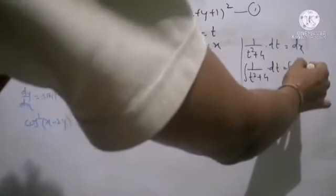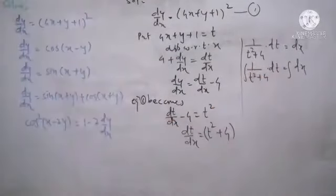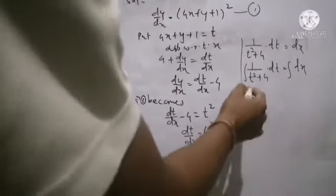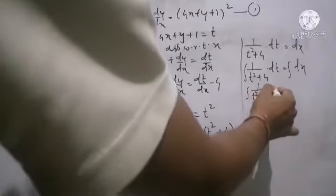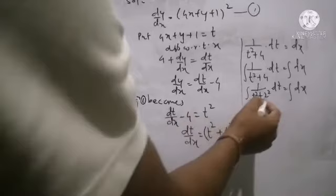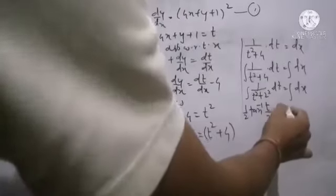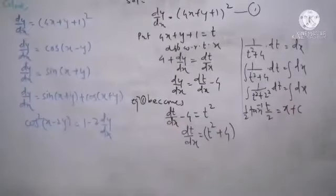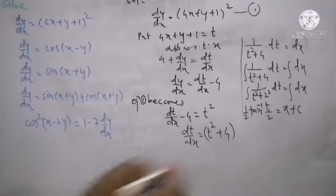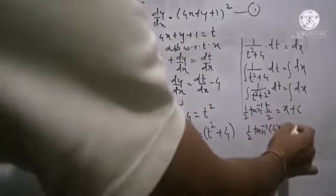The term of t and dt are separated, and dx is separated. Take integration to solve. On the left hand side, this is of the rational function form: numerator 1, denominator is a quadratic term of t with constant. We write the constant as a power square: 4 is the square of 2. Using the standard form, the integration is one over a times tan inverse of t over a, where a is 2. So we get integration one-half tan inverse of t over 2, equals x plus c. Re-substituting the value of t equals 4x plus y plus 1, the answer is one-half tan inverse of 4x plus y plus 1 over 2 equals x plus c.